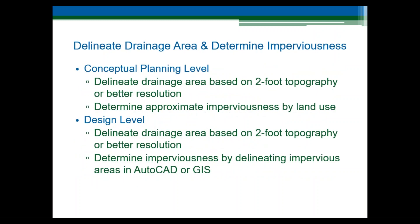The first step in the process is determining the drainage area and the imperviousness. If this is being done at a planning level, you should use two-foot topography or better resolution if available. Watershed boundaries generally run perpendicular to contours, and the boundary can be delineated in AutoCAD or GIS. At a planning level, it's okay to use typical imperviousness values for land uses, such as those in Table 6-3 of the Urban Storm Drainage Criteria Manual, which assigns imperviousness based on general land use categories such as industrial, residential, or commercial. For design level analysis, imperviousness should be determined by delineating impervious areas on design plans.